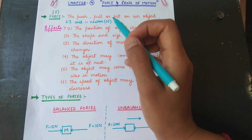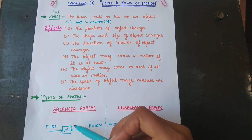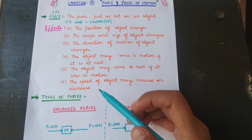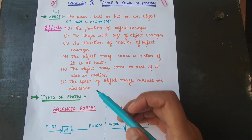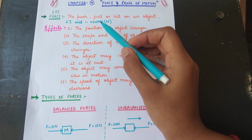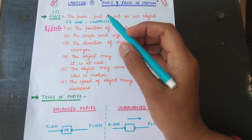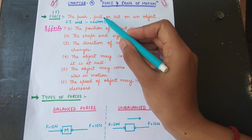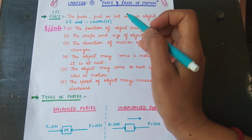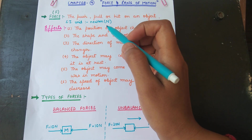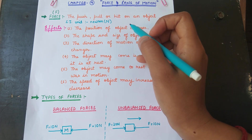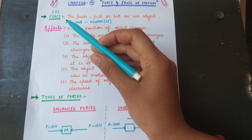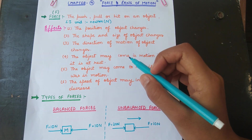If we are going to push a block in any direction, we are applying force. If we are pulling an object, like pulling a car, that is also force. If we are hitting an object — for example, kicking a football — that is also force. Force is a vector quantity applied on an object in a particular direction.